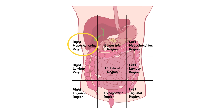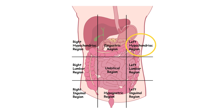The right hypochondriac region includes the liver and gallbladder. The epigastric region includes the stomach and part of the liver. The left hypochondriac region includes the stomach and the spleen.